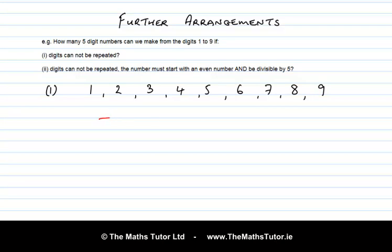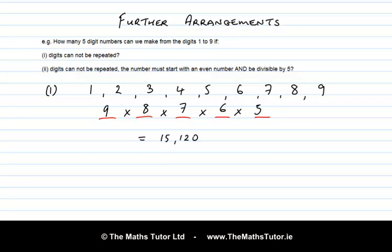Let's start with Part 1. We have the digits 1 to 9 — there are 9 of those digits — and we want to make 5-digit permutations or arrangements. There are 5 slots to fill. The only restriction is that digits cannot be repeated. So for the first slot we can choose any of the 9 digits, giving 9 choices, then 8, then 7, then 6, then 5. Using the fundamental principle of counting, we have 9 × 8 × 7 × 6 × 5 = 15,120 different arrangements.